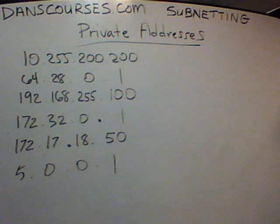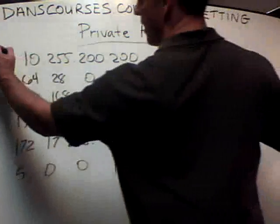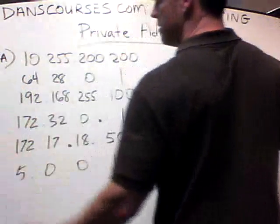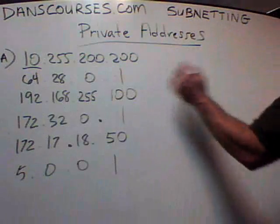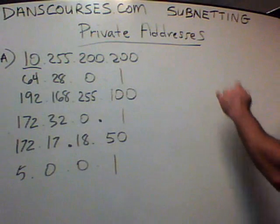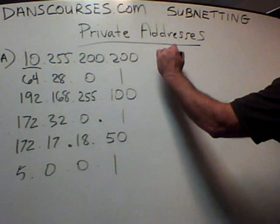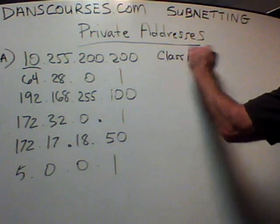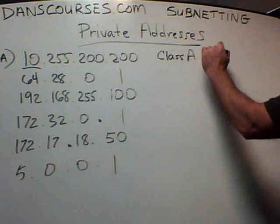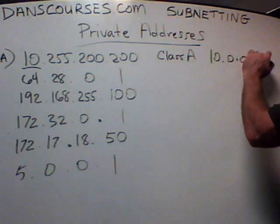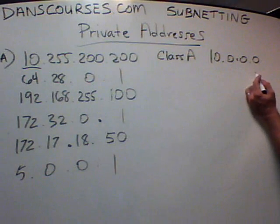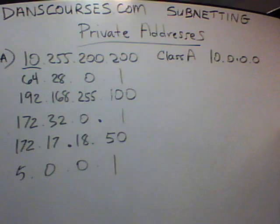Andrew says the first one. Why is this one private? Because the first number is a 10. Excellent — if the first number is a 10, that is a private address. That's a Class A private address, meaning anything that starts with 10: so 10.0.0.0 all the way up to 10.255.255.255 is private. So you're right, the first one's private.